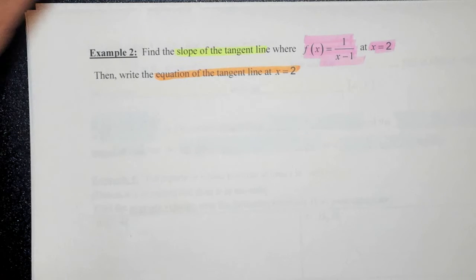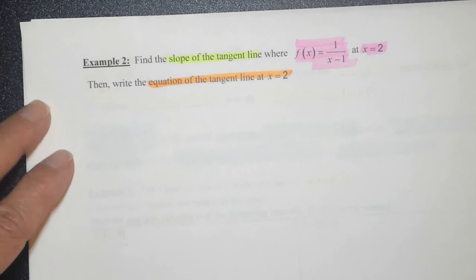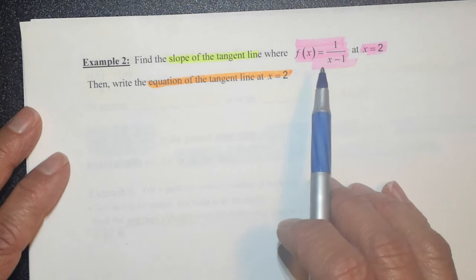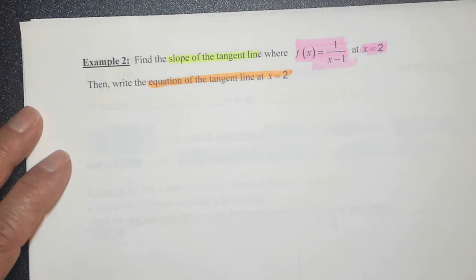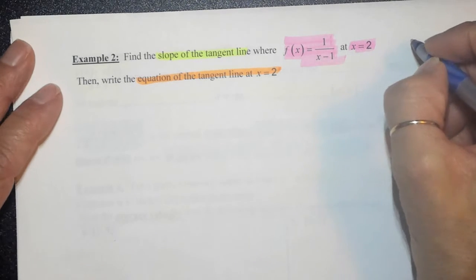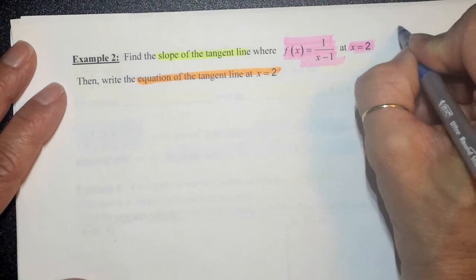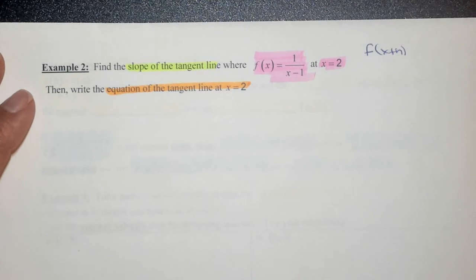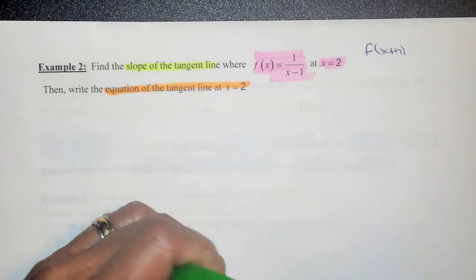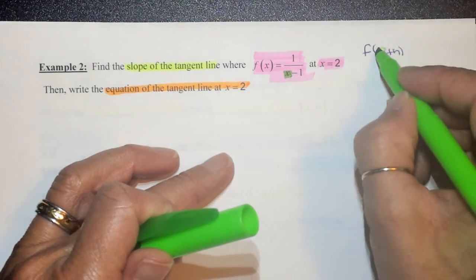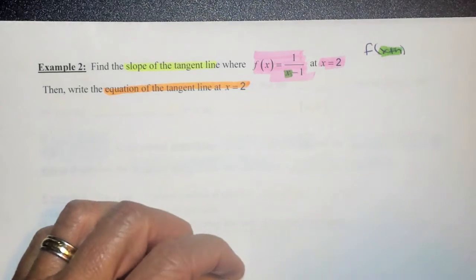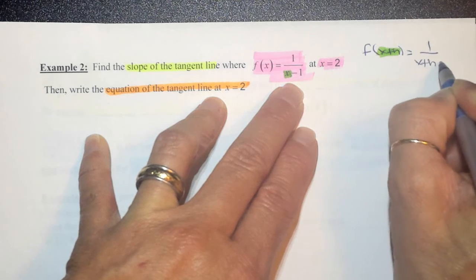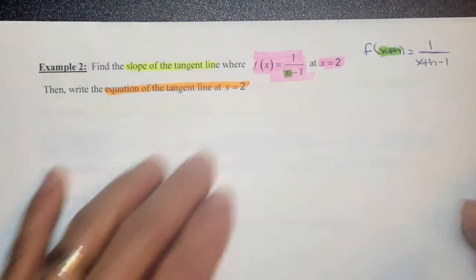What we're going to do here is apply the formula from the previous page: the limit as h approaches zero of f of x plus h minus f of x, all over h. First, it's helpful to identify a couple of pieces we'll need. Since this is a rational function, finding f of x plus h will be easier if we do it separately — wherever we have an x, we put in x plus h. So f of x plus h is 1 over x plus h minus 1.